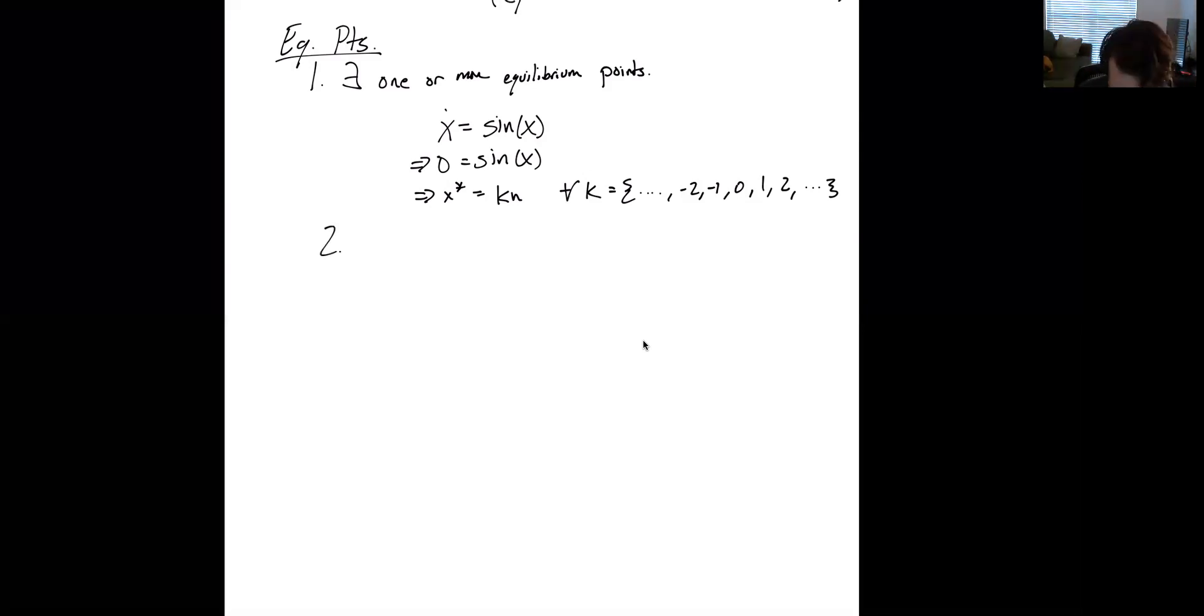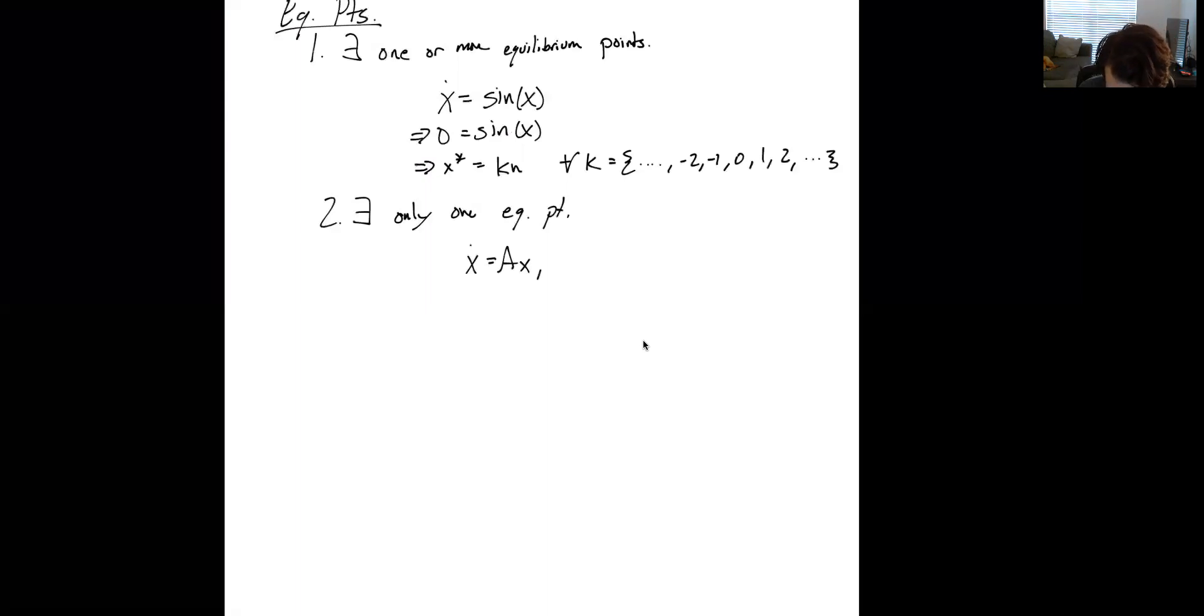So we can also have the case where there exists only one equilibrium point. So this would look like, let's say we look at a linear system x dot is equal to Ax, where A is full rank. So now what's full rank? If we remember back to linear systems which you may have taken in undergrad.